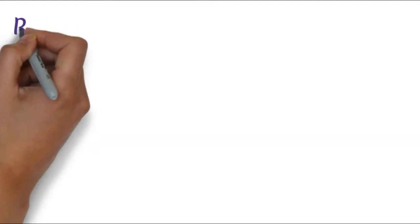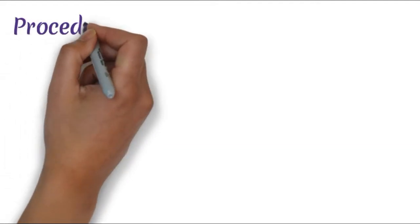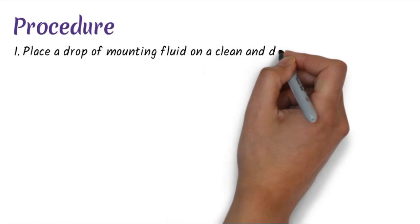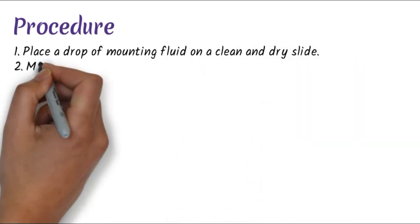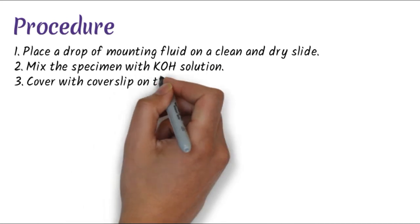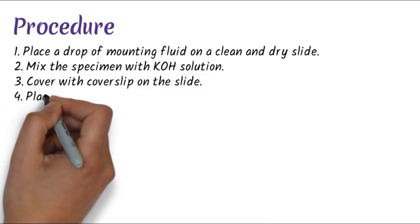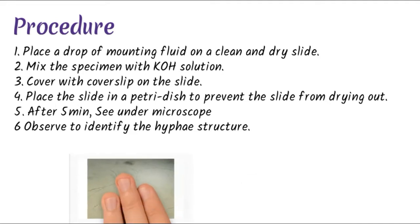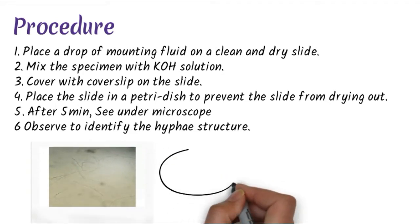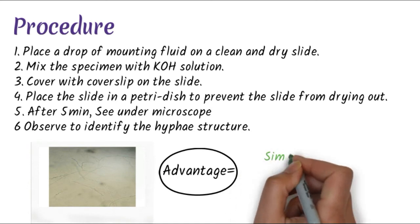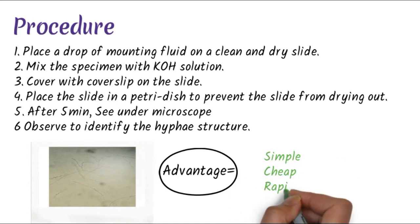The procedure: place a drop of mounting fluid on a clean and dry slide, mix the specimen with KOH solution, then cover with a cover slip. Place the slide in a moist chamber to prevent the slide from drying out. After about five minutes, examine under the microscope and observe the hyphae structure. The advantage is that it is a very simple, cheap, and rapid method for the identification of hyphae.